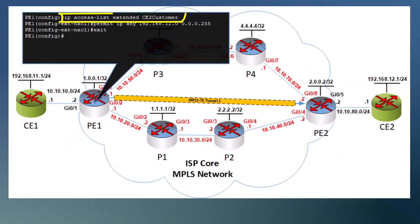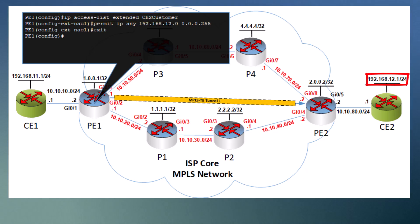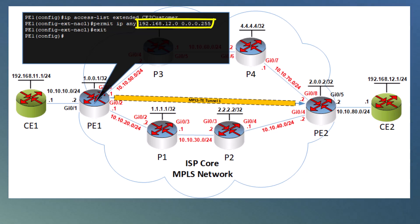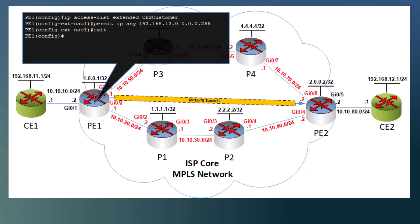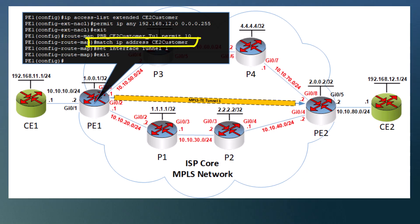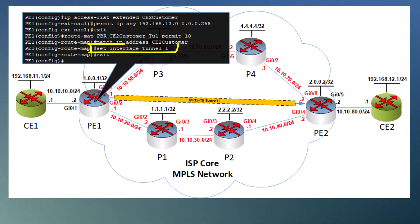Let's start by creating our access list that will match the desired traffic. We want to match any traffic that has a destination address within the 192.168.12.0/24 destination subnet. We can do this by issuing the following permit statement — this will match any source address and destination addresses within this subnet. There's an explicit deny at the end of the ACL, so it denies all other traffic that does not match. Next, we'll create the route map that will use the ACL to match the specific traffic and apply our routing policy. Any packet that matches the IP addresses found in this ACL will have the set statement applied to it, which essentially says: send it out of the tunnel1 interface.